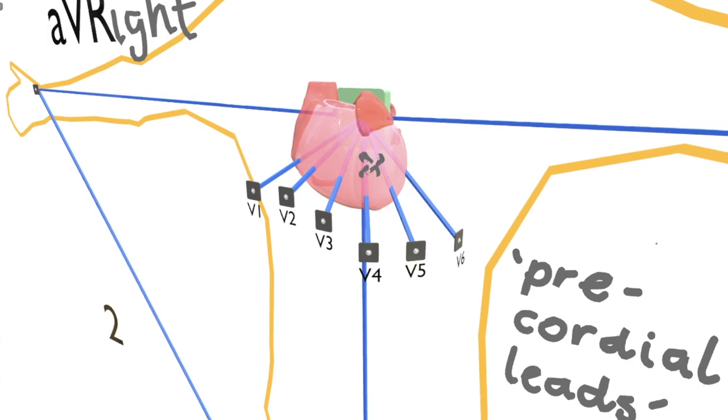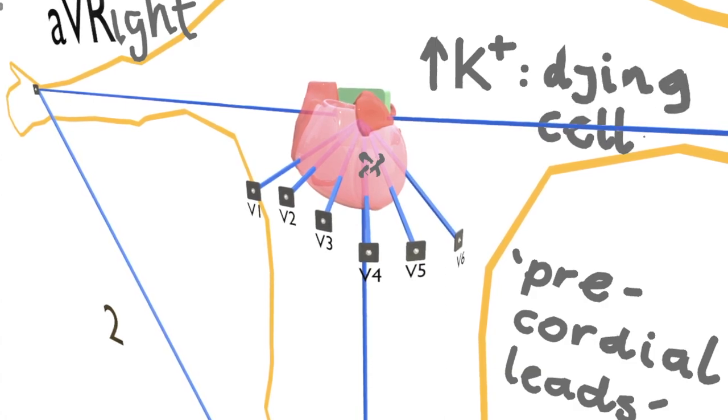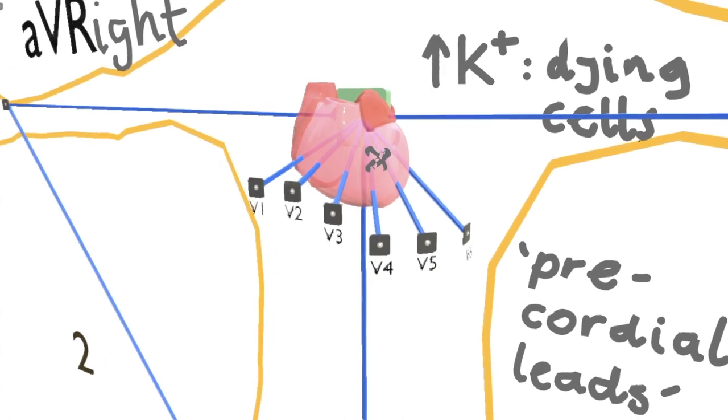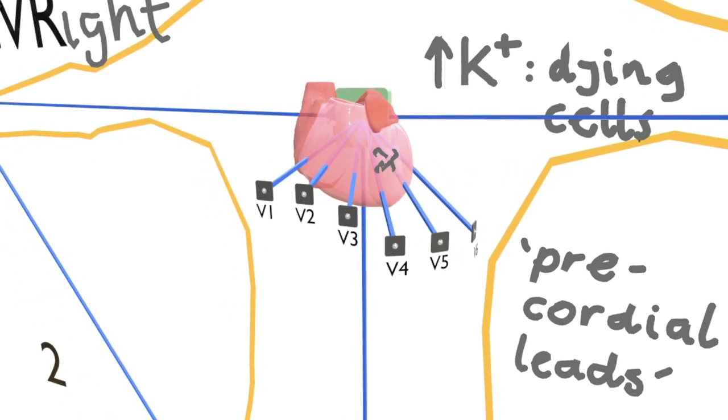These changes might be caused by an increase in the local level of potassium, for example, which is released by dying cells. This will interfere with the way cells in this area repolarize because repolarization mostly occurs by removal of potassium from cells.